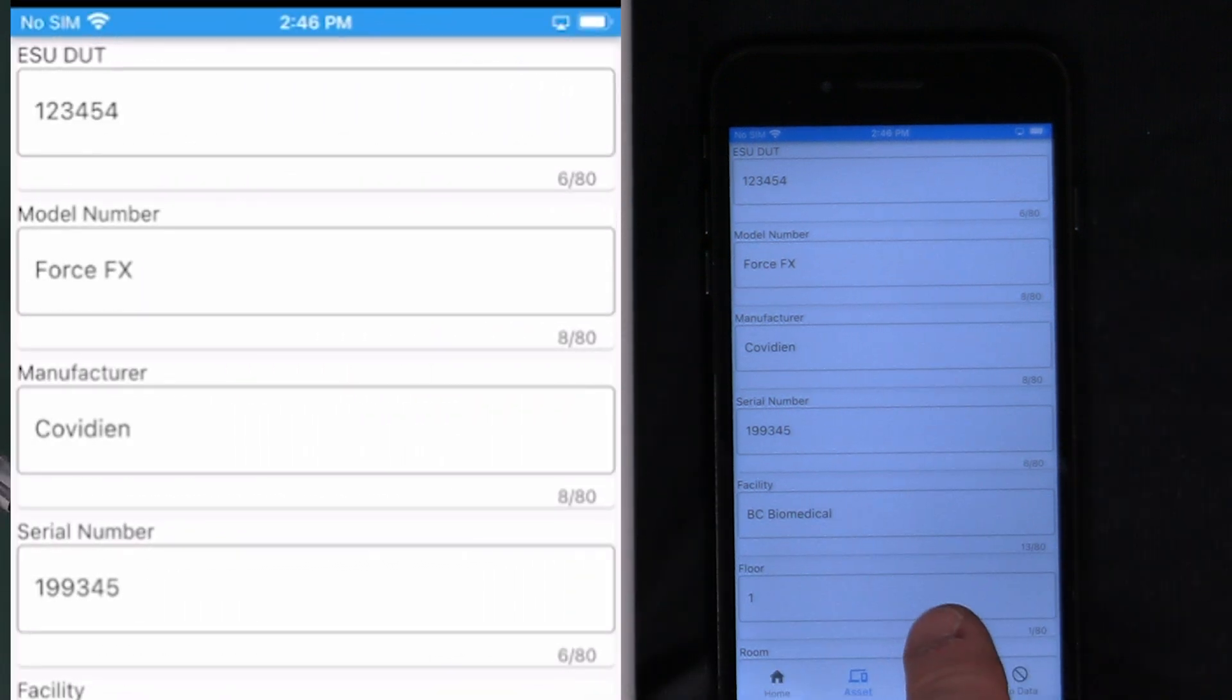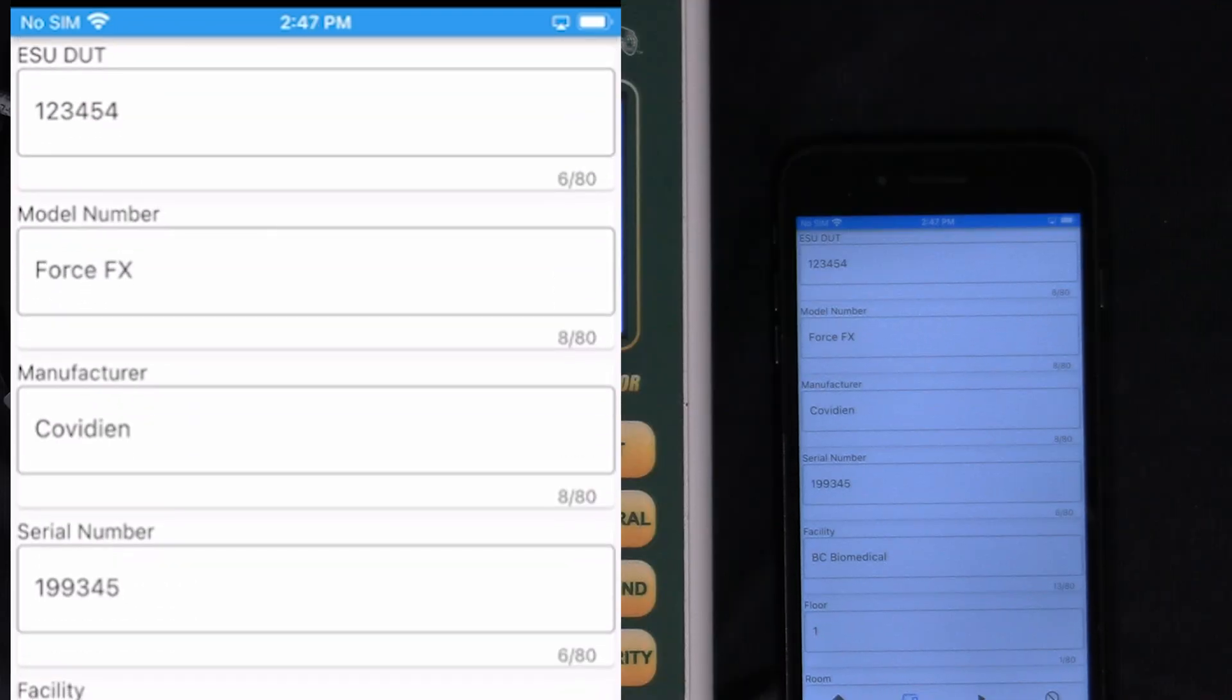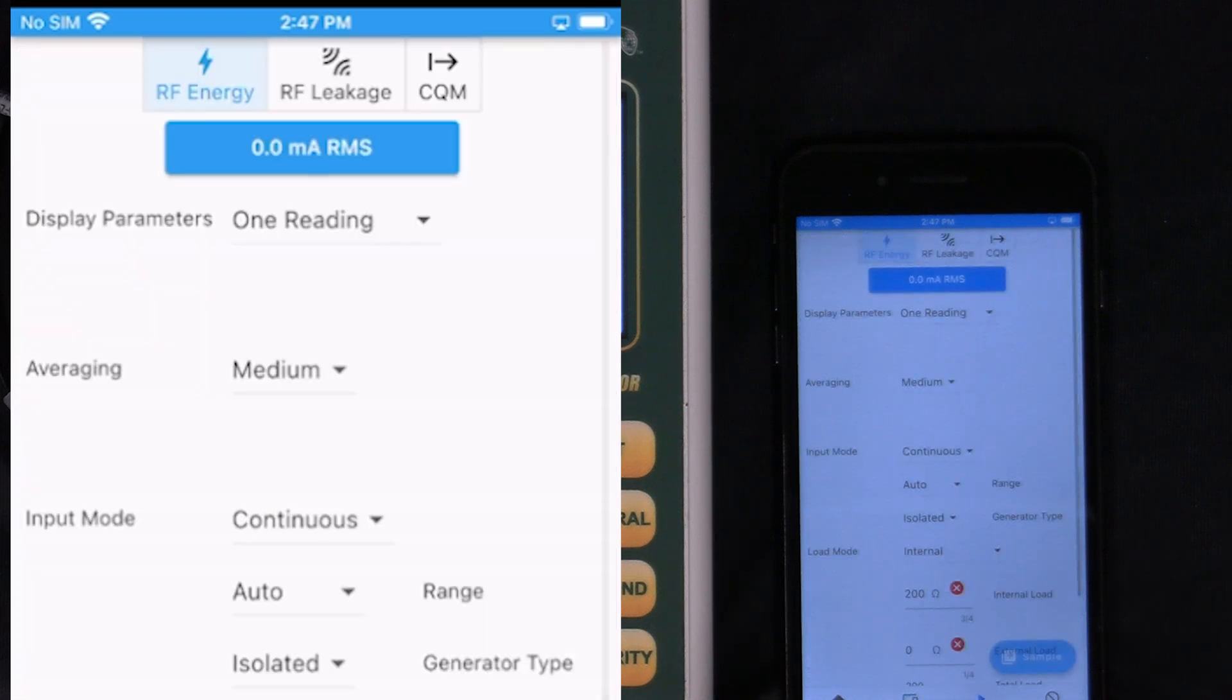This confirms on the screen that I have the correct asset selected. If I didn't I could go back and select the correct asset. There's no data yet so I'm going to go straight to test and now I'm presented with what options I want to test.